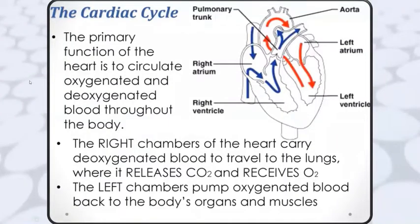Now we will see what is meant by the cardiac cycle. The primary function of the heart is to circulate oxygenated and deoxygenated blood through the body. The right chambers of the heart carry deoxygenated blood to the lungs where it releases carbon dioxide and receives oxygen, and the left part receives oxygenated blood back to the body's organs and muscles.